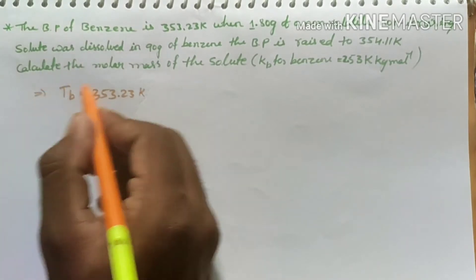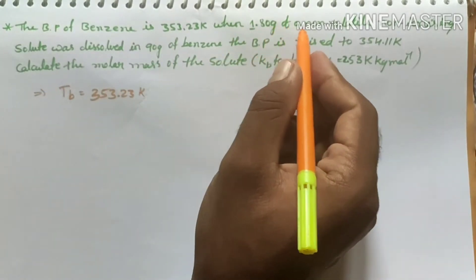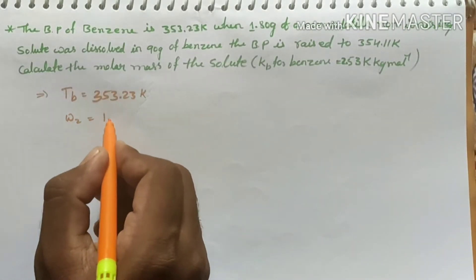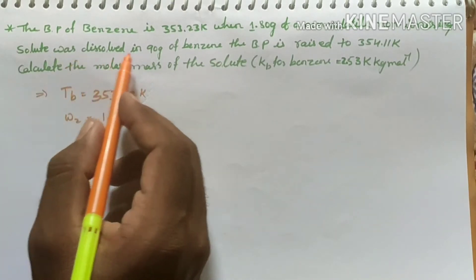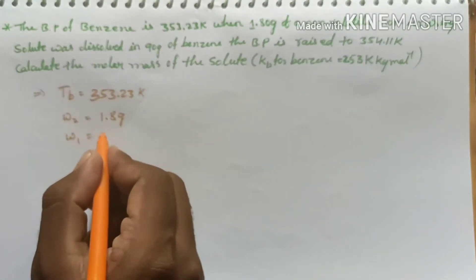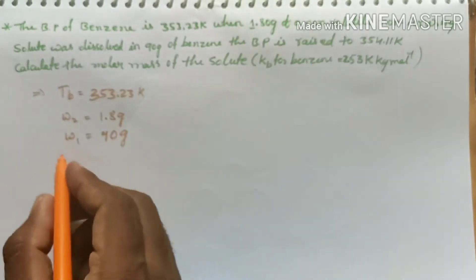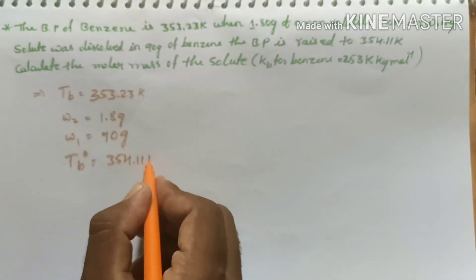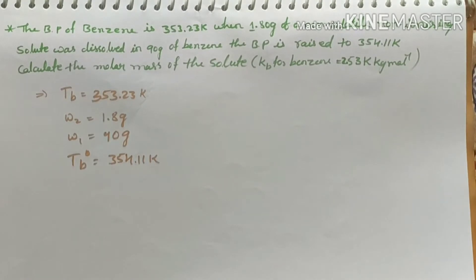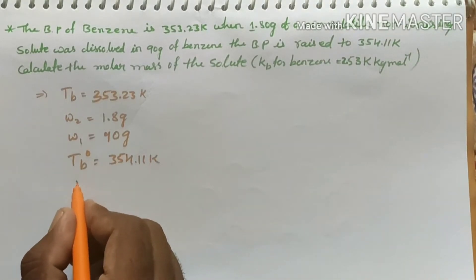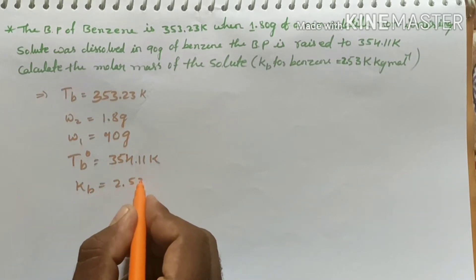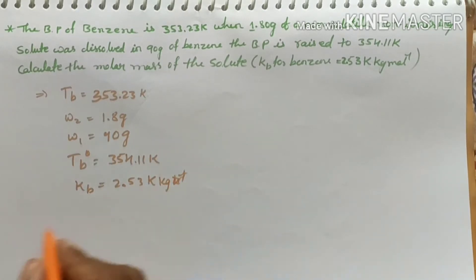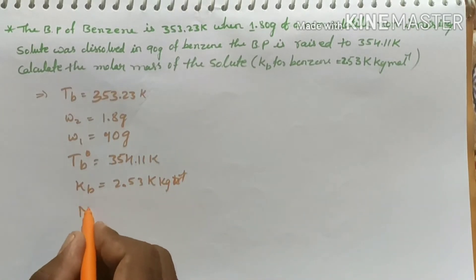When 1.8 gram of non-volatile solute (w2 = 1.8 gram) is dissolved in 90 gram of benzene (w1 = 90 gram), the boiling point rises to Tb = 354.11 kelvin. The kb value given is 2.53 kelvin·kg per mole. Calculate the molecular mass M2.